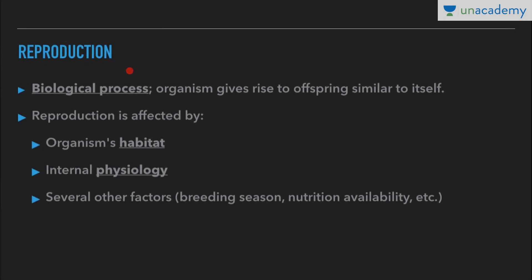Reproduction — that is 'to produce'. Reproduction is basically a biological process in which an organism gives rise to offspring similar to itself. A new individual organism, that is the offspring, is produced by the parents. Reproduction is a very fundamental process in biology.